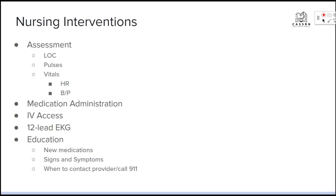Nursing interventions include always doing a good assessment — understanding their level of consciousness, checking pulses, and vital signs, specifically heart rate and blood pressure. We might need to administer medication like atropine, ensure IV access, and get a 12-lead EKG going. Once everything is settled, take time to educate your patients: what new medications are involved, what signs and symptoms to watch for, and when it would be appropriate to contact their provider or call 911.